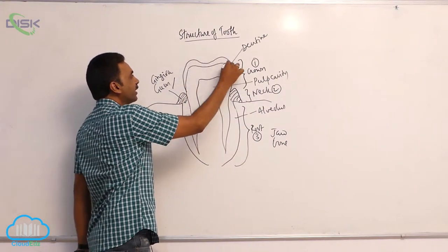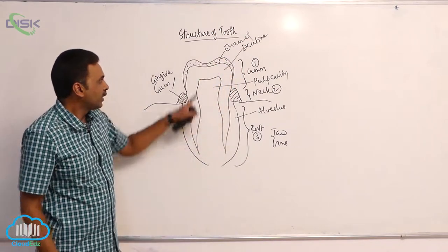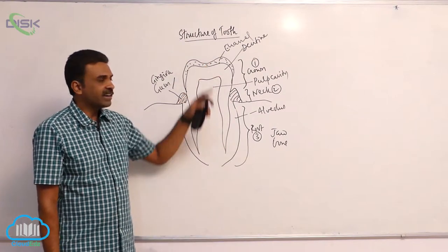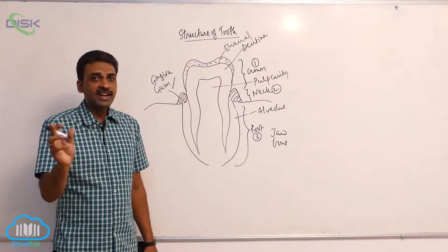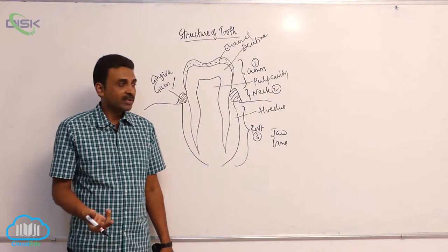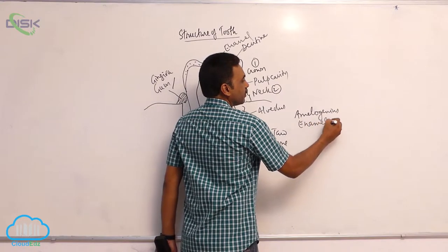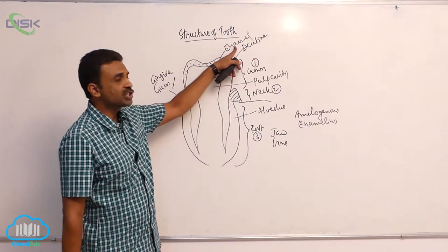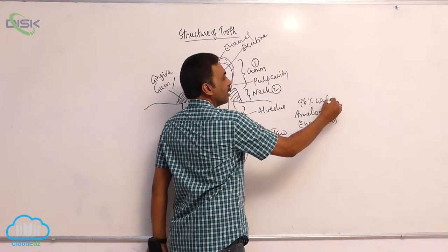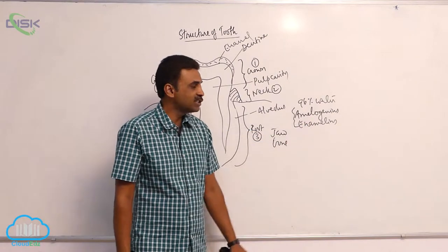Covering the dentine externally, you can find enamel. Enamel is the hardest substance in the body. If you see the composition of enamel, it contains 96 percent inorganic mineral and 4 percent organic substances. The organic substances include various proteins — specifically amelogenins and enamelins.